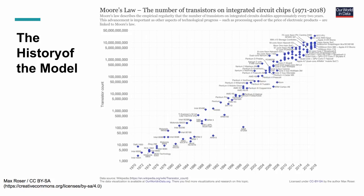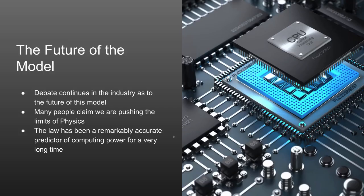The model has held remarkably consistent from 1970 all the way through 2018. Looking at some of the higher-end chips being created by manufacturers such as Intel with the Xeon processors, Microsoft with the Xbox processor, and IBM — all kinds of different manufacturers — it's remained remarkably consistent how this model has held over time.